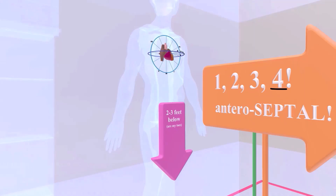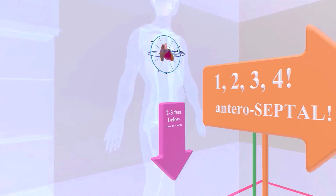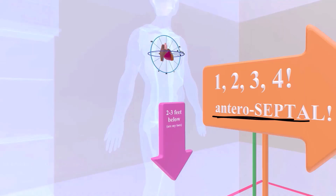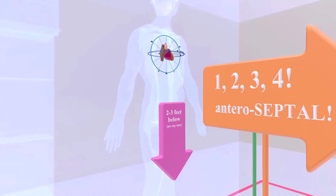There's a little rhyme: '1, 2, 3, 4, anteroseptal' — a pretty awful rhyme, but the point is that V1, V2, V3, and V4 are the anteroseptal leads.